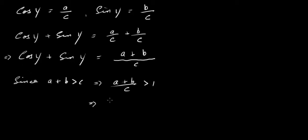That would then mean that because A plus B over C is bigger than 1, A plus B over C is equal to cos Y plus sine Y. That must be bigger than 1 as well. Since A plus B over C is equal to cos Y plus sine Y. So that's it really.